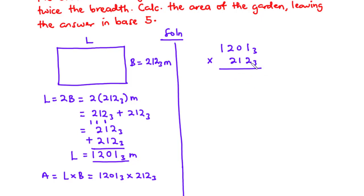Multiplying by the units digit 2: 2 times 1 is 2. 2 times 0 is 0. 2 times 2 is 4; 4 divided by 3 is 1 remainder 1, so we write 1 and carry 1. 2 times 1 is 2, plus 1 carried is 3; 3 divided by 3 is 1 remainder 0, write 0 and carry 1. Bringing down the leading 1, the first partial product is 1010102 base 3.